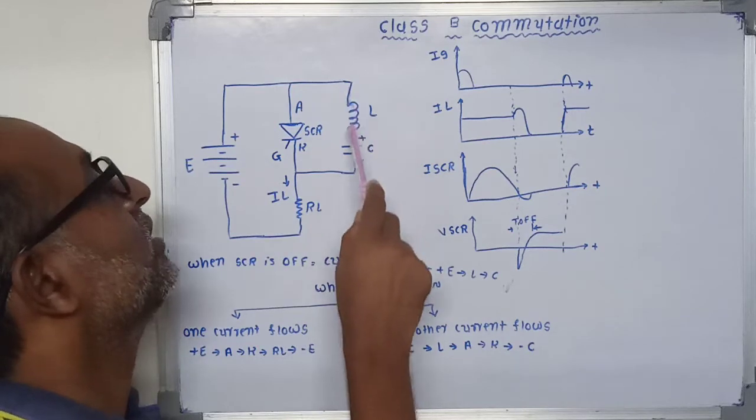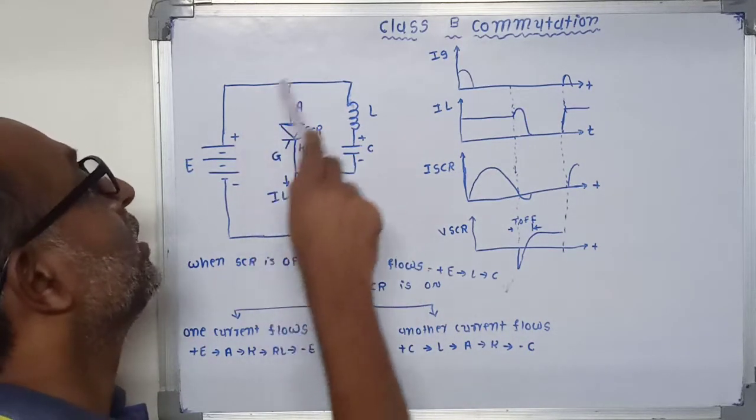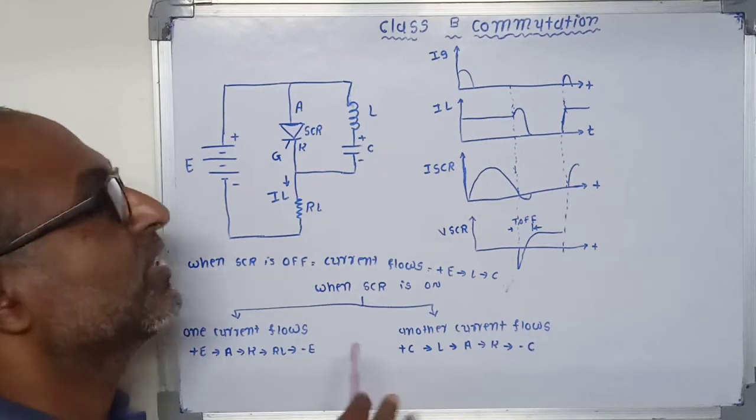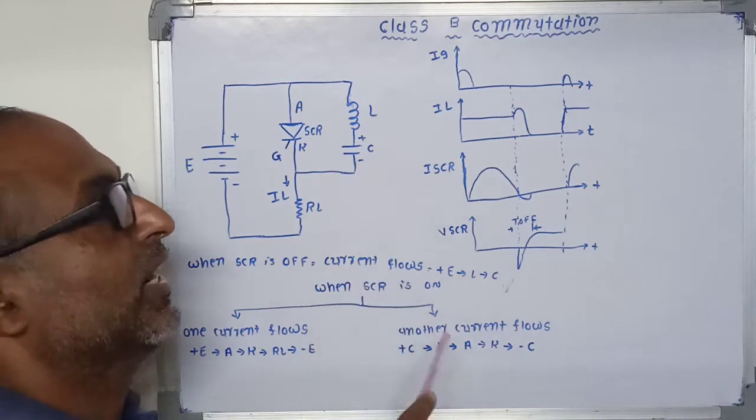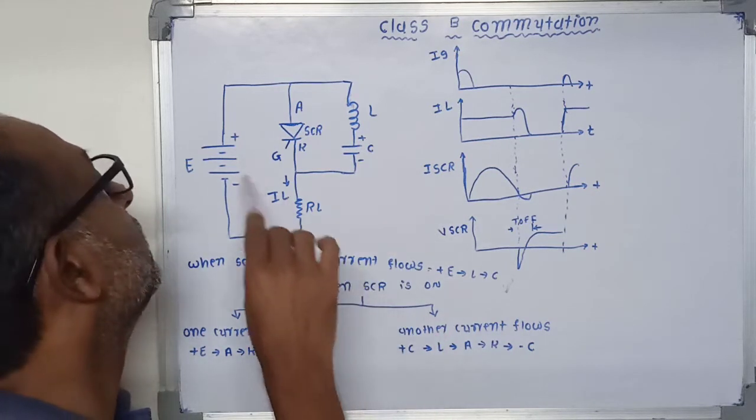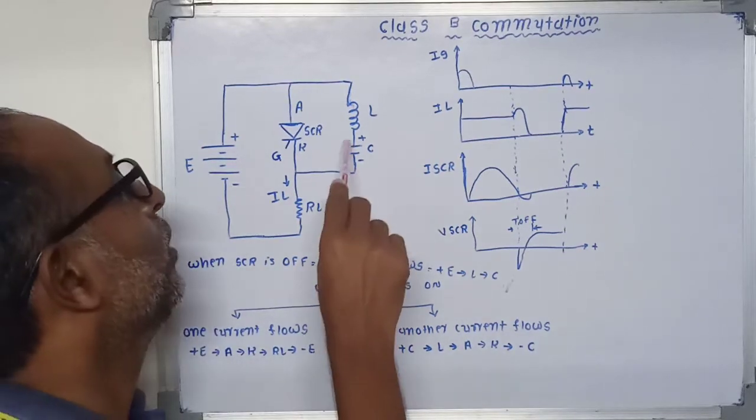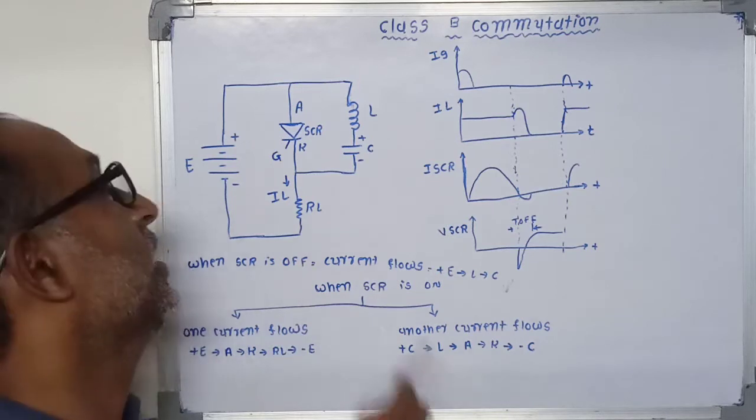The capacitor starts to charge and current flows from plus E to L to capacitor C. This capacitor is charged with upper plate positive and lower plate negative. When the capacitor is fully charged, the voltage available at the capacitor is equal to the supply voltage E.